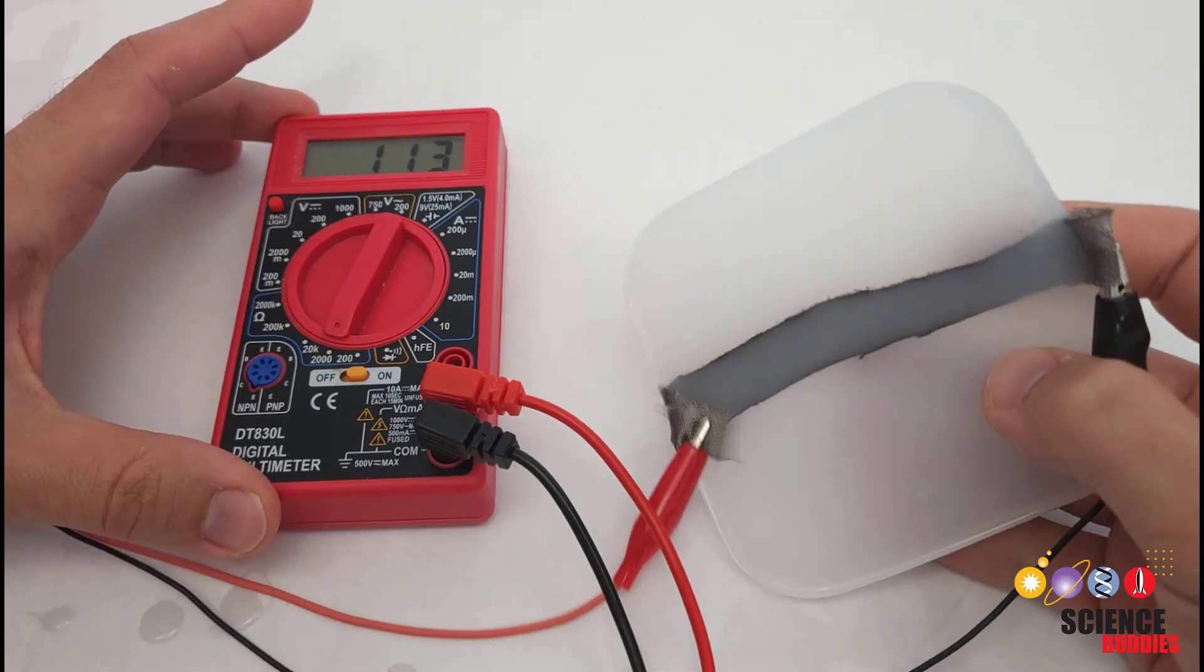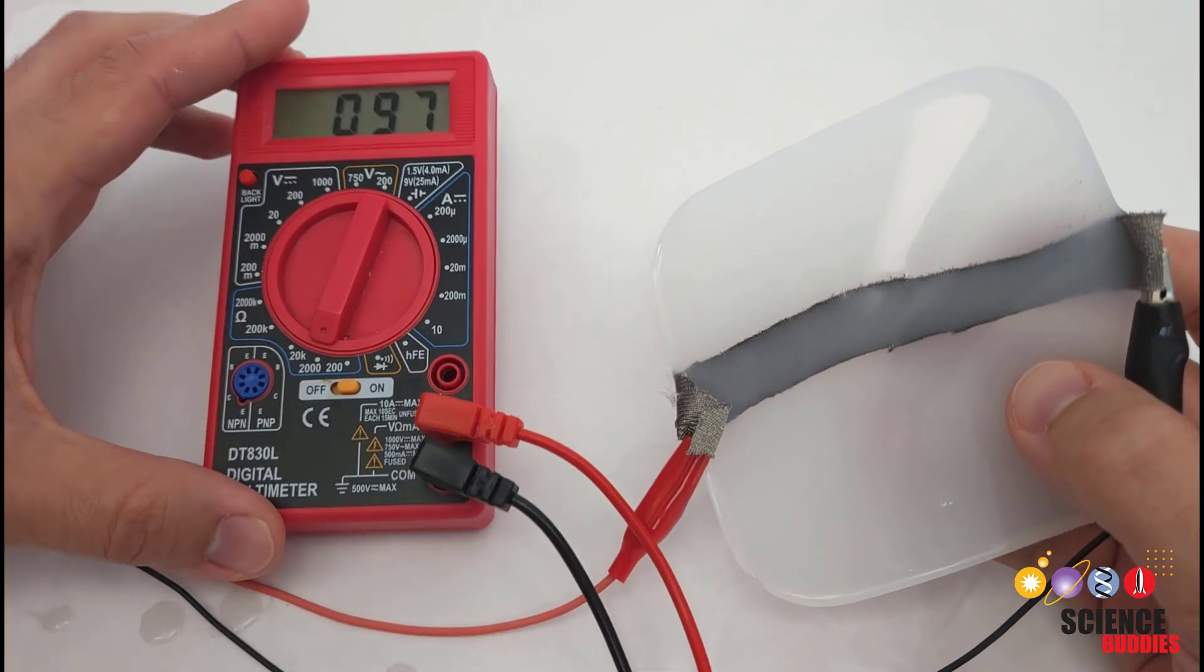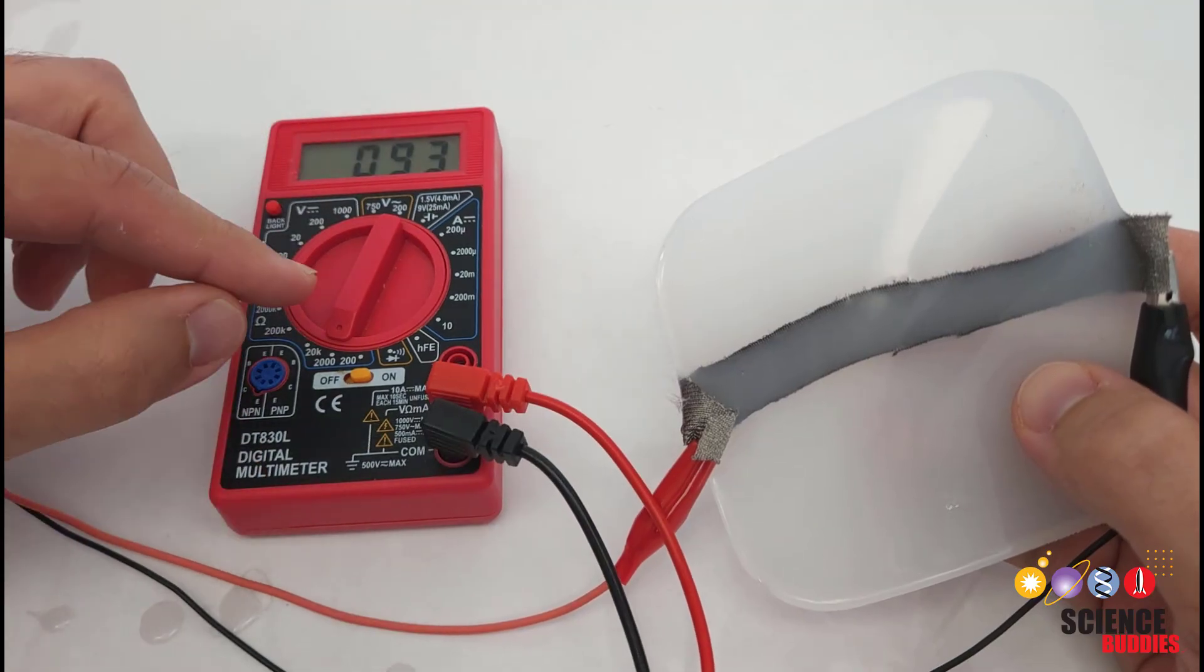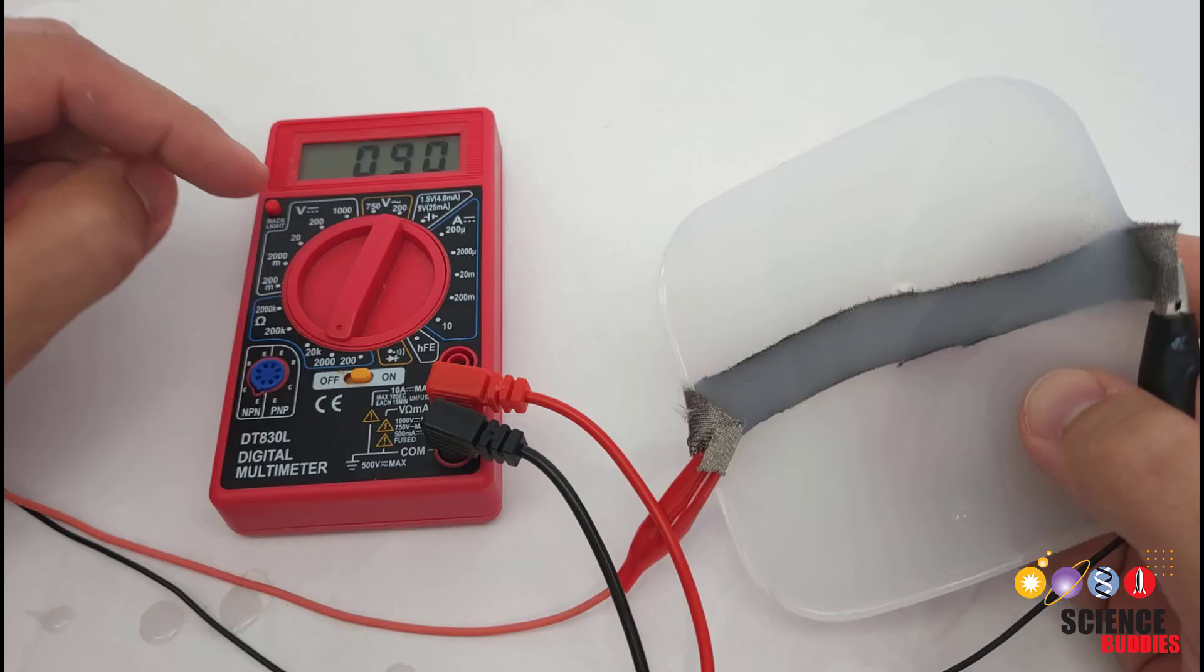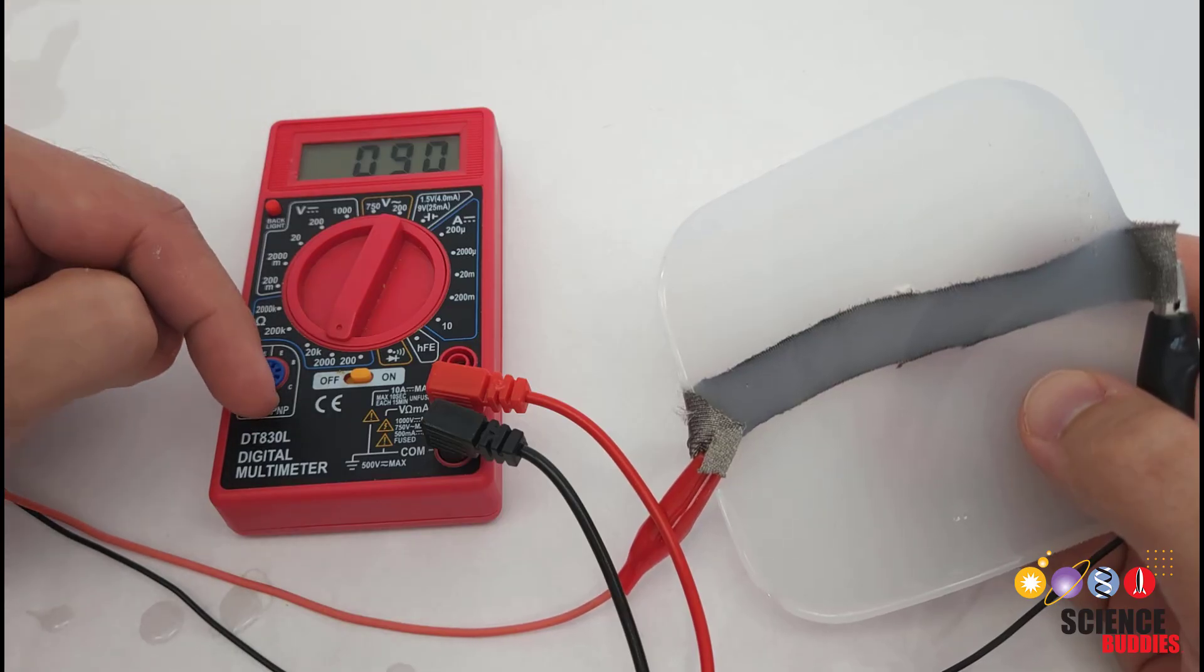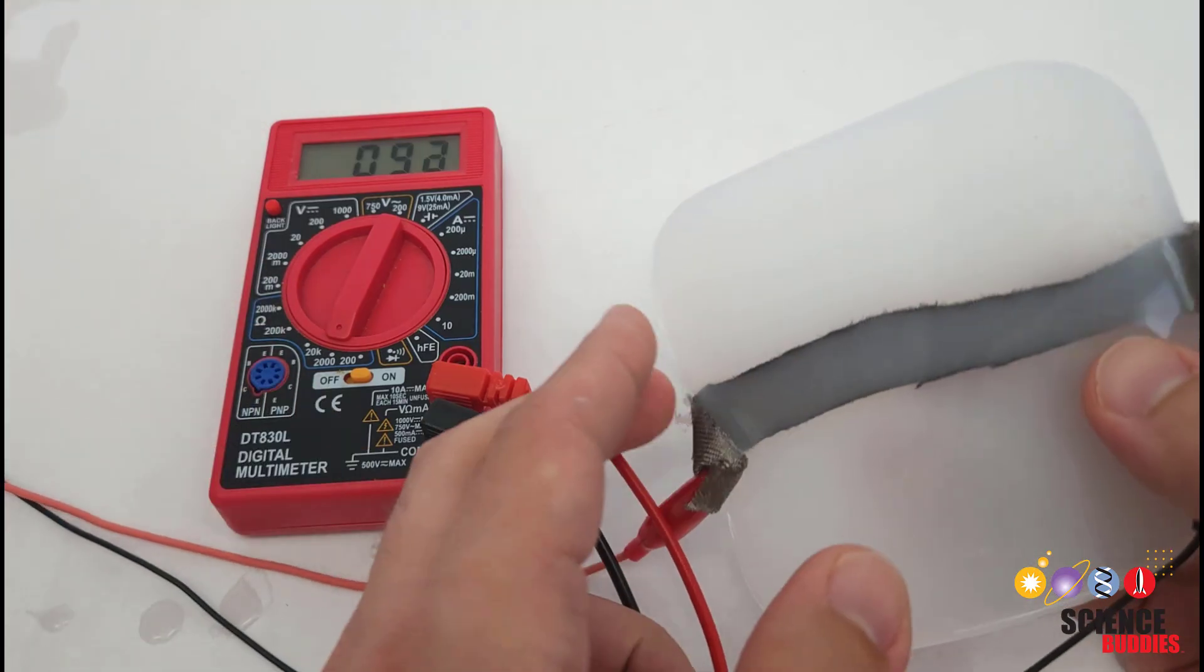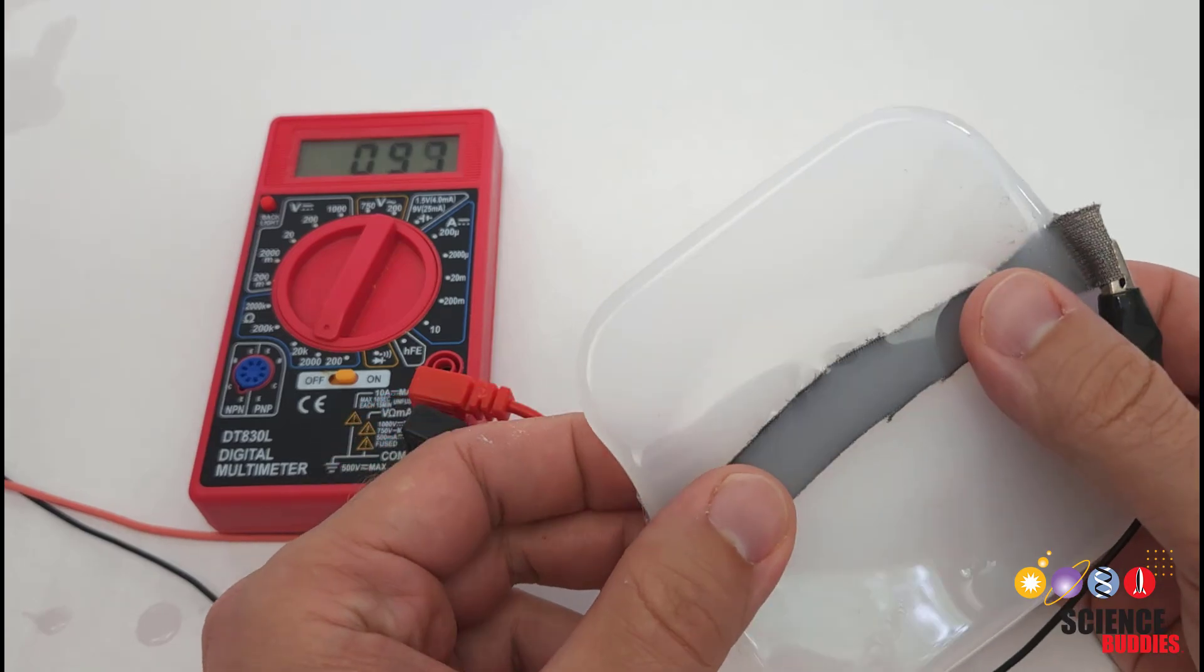So here I have my artificial robotic skin connected to a multimeter set to measure resistance. If you're not sure how to use a multimeter, we have a great tutorial about that. You can find it linked in the description of this video. So I'm not going to go over all the details here. You can go check out that video if you need to learn how.